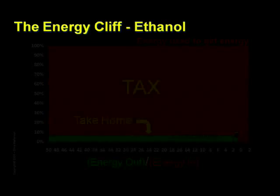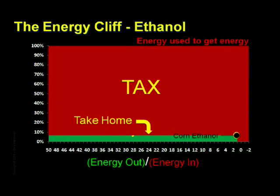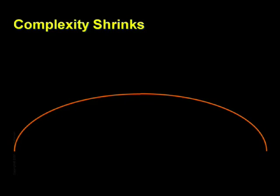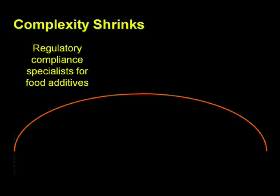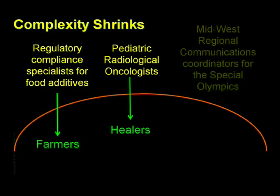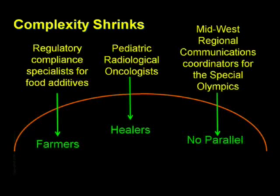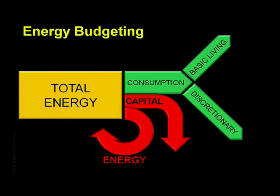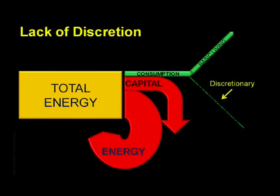The important point here is that even if the government completely subsidized ethanol to the point that it only cost you a penny a gallon to buy, we would soon find ourselves ruined. With less surplus energy, less societal complexity is possible. Under an ethanol regime, we'd find that many cherished job positions would simply vanish. Regulatory compliance specialists for food additives would have to revert to being farmers. Pediatric radiological oncologists would become healers. Midwest regional communications coordinators for Special Olympics would have to find something else to do. If we tried to live on ethanol as a liquid fuel, we'd quickly lose nearly all of the specialized jobs we associate with modern society, because there would be practically no surplus energy to use in support of that complexity. Ethanol and other such poor energy sources are thoroughly incompatible with our current lifestyles.